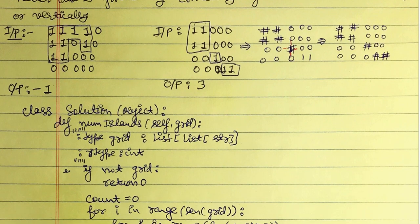Let's consider the first example input: the first row is one, one, one, one, zero; the second row is one, one, zero, one, zero; the third row is one, one, triple zero; and the fourth row is all zeros. If we look for islands formed only by vertical or horizontal connections, we see there is just one island possible.